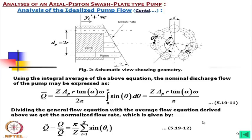Dividing the general flow equation by the average flow gives the normalized flow rate. When this normalized flow is plotted, it automatically shows the flow ripple.